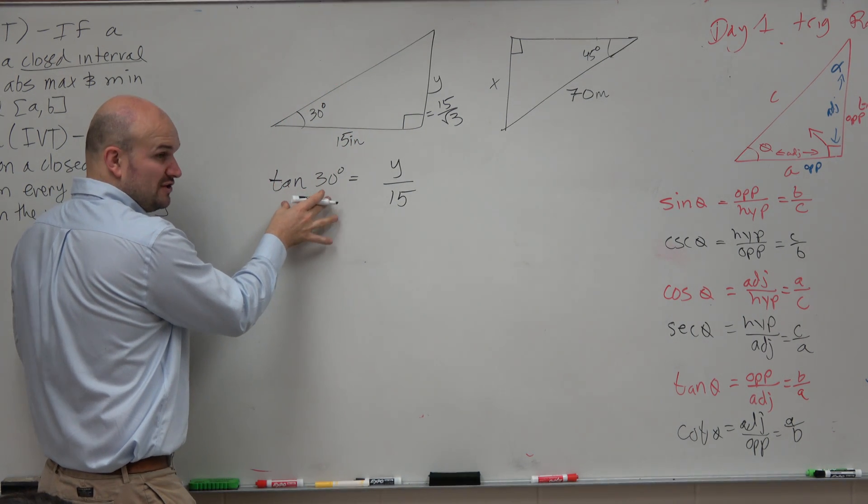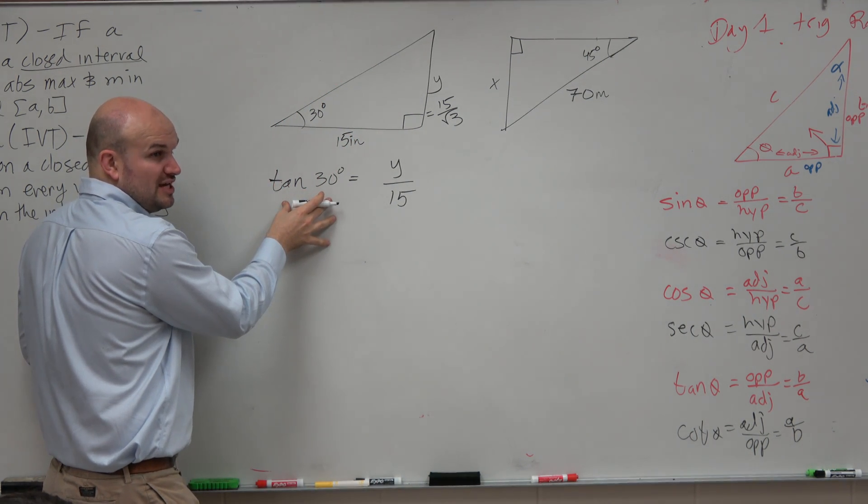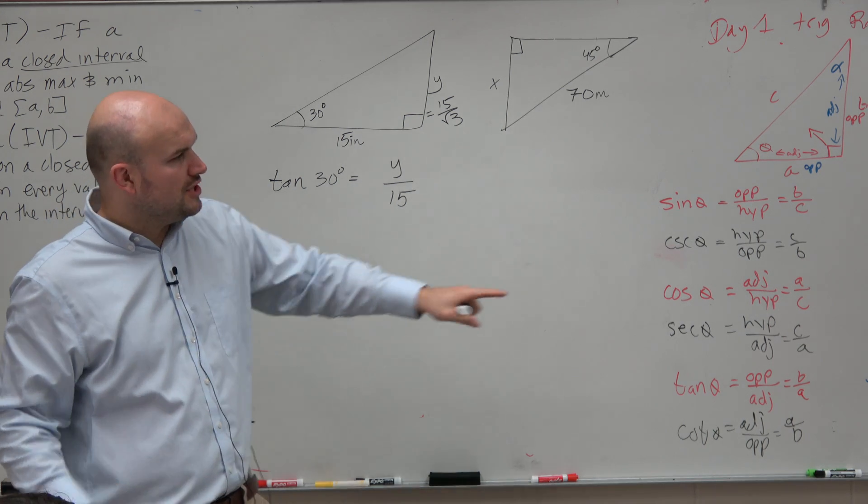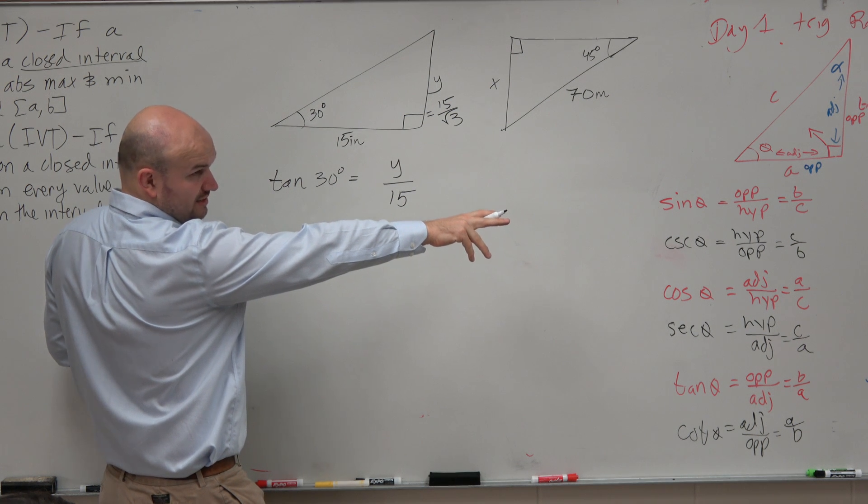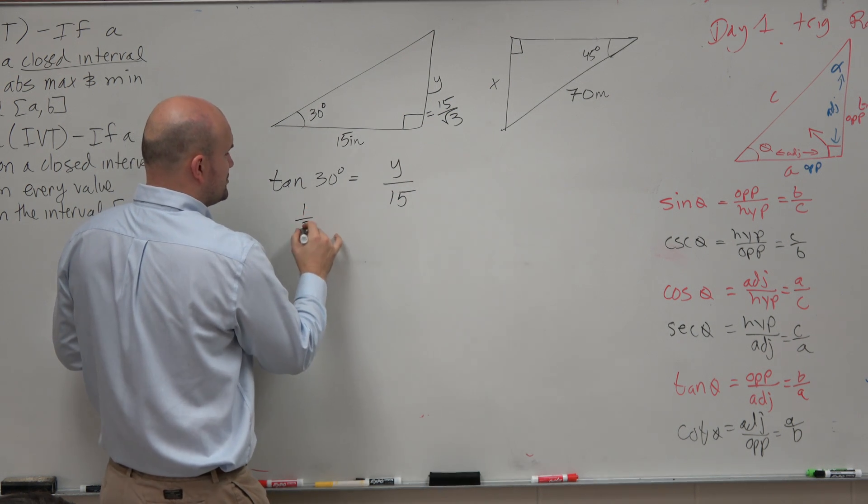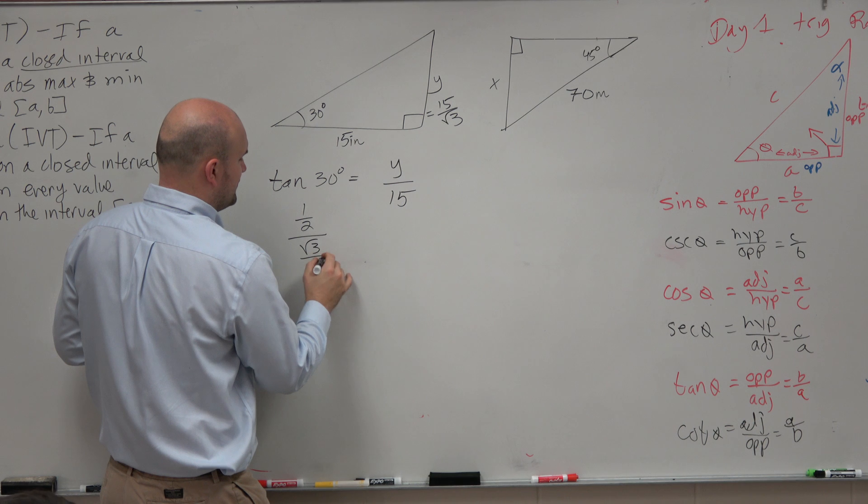However, the tangent of 30 degrees is just the opposite over the adjacent, right? So if you guys look at that, the opposite over the adjacent in the same thing, which if we look at the triangle with the hypotenuse of 1 is just 1 half over the square root of 3 over 2,